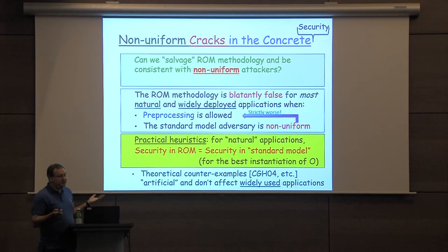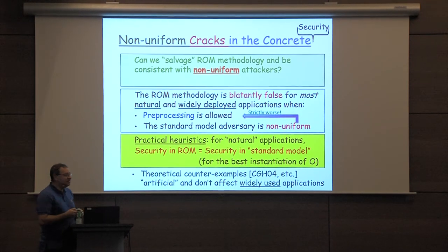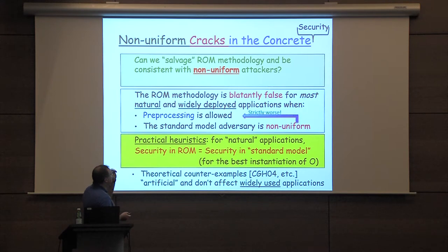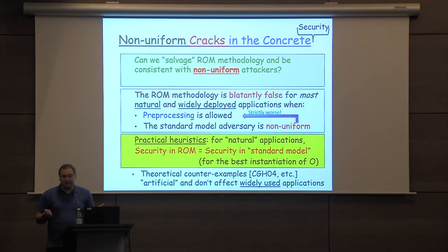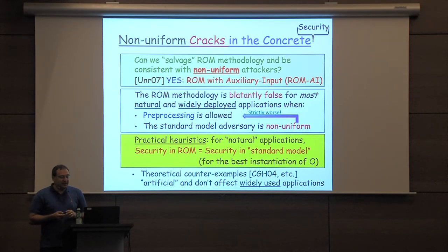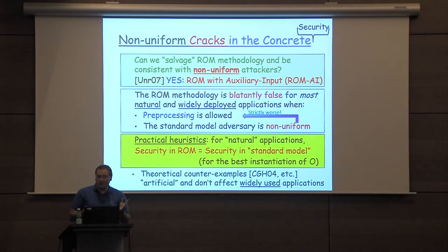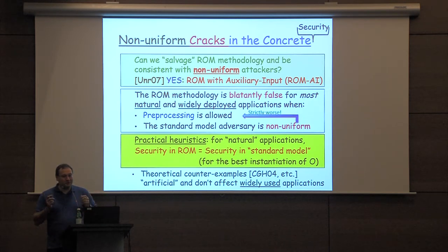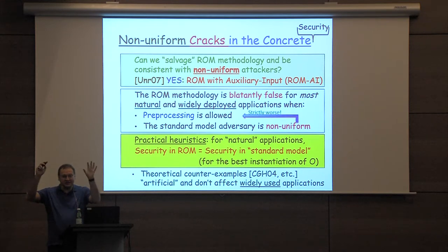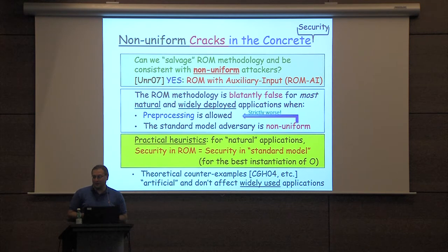Pretty much every application — when either preprocessing is allowed or from the theory side, non-uniformity is allowed — shows this gap. So the question is, can we salvage this methodology and be consistent with non-uniform adversaries for all the reasons I mentioned? And luckily, the answer is yes. That was formally done in a beautiful paper of Unruh. It's a pity Dominic is not here, but it's a really cool paper if you haven't seen it — perhaps missed by the mainstream obfuscation crowd, but really a nice, important paper.